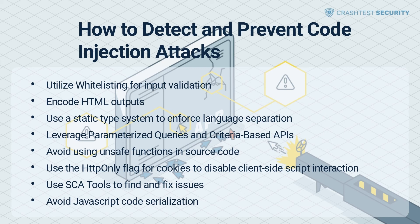Encode HTML outputs. Security teams should leverage contextual output encoding to convert malicious input into safer representations, where user data can be displayed but not executed as code. Use a static type system to enforce language separation — teams can develop declarative control checks without additional runtime overhead. Leverage parameterized queries and criteria-based APIs to interpret user data strings, ensuring that APIs do not accept string values other than those specified. Additionally, parameterized queries treat inputs of malicious commands as a string instead of an SQL command.